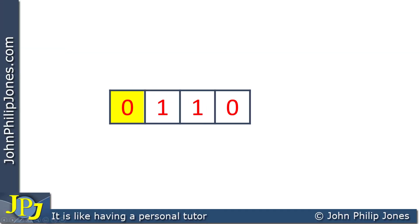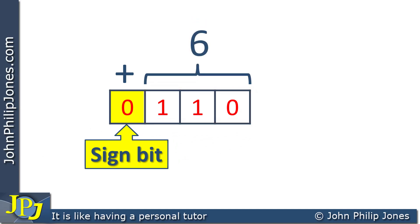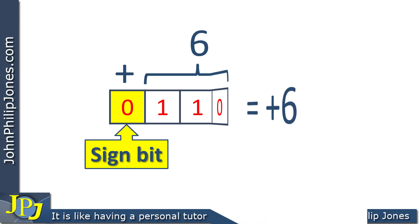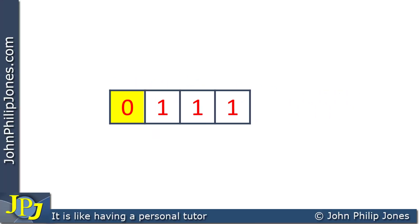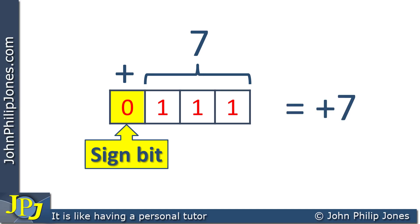Consider this example: the sign bit is positive and these three bits represent the magnitude, which is 6, so this nibble represents positive 6. Consider this next example: the sign bit is positive and the magnitude is 7, so the nibble represents positive 7.